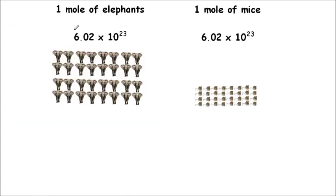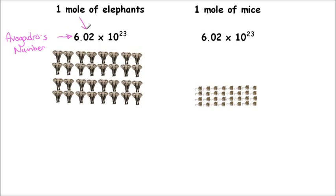A mole is a number, and this is the number: 6.02 times 10 to the 23. This is called Avogadro's number. This is a huge number — it's inconceivably big. 6.02 times 10 to the 23 means 6 with 23 zeros after it — a huge, huge number, because that's the sort of scale we're looking at with atoms and elements. So one mole of something contains 6.02×10²³ of them. One mole of elephants means 6.02×10²³ elephants, and one mole of mice means 6.02×10²³ mice.